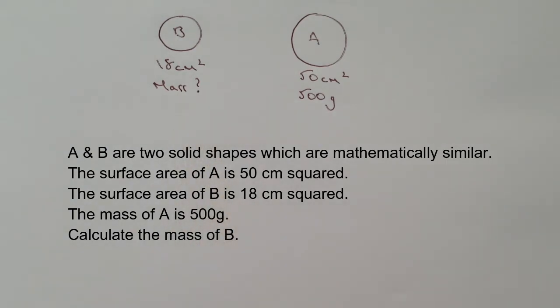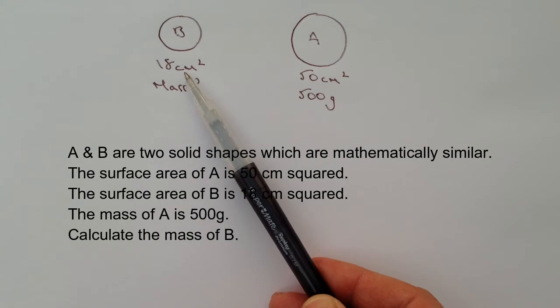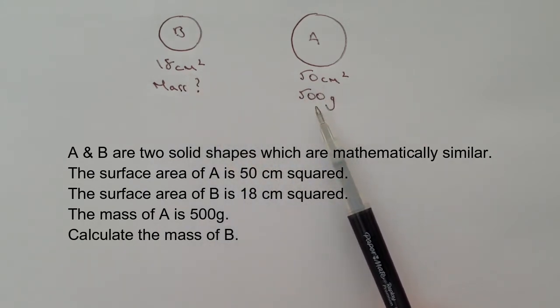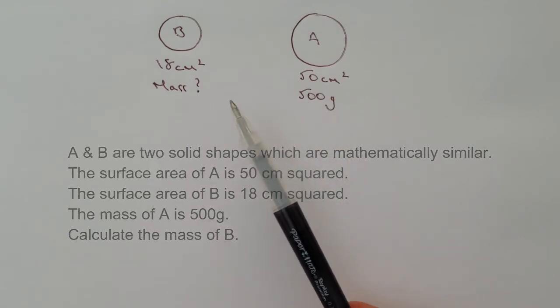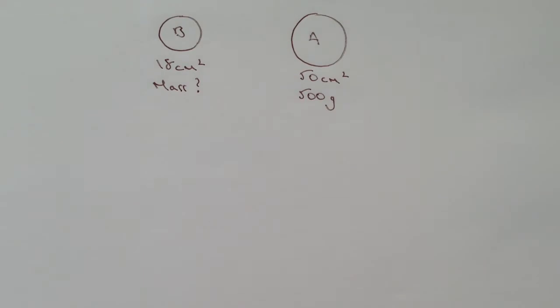Which basically means that they're the same shape. So we've got one with a surface area of 18 centimeters squared and the other is 50 centimeters squared. We're told that the bigger one has a mass of 500 grams and we're looking to calculate the mass of the smaller one.